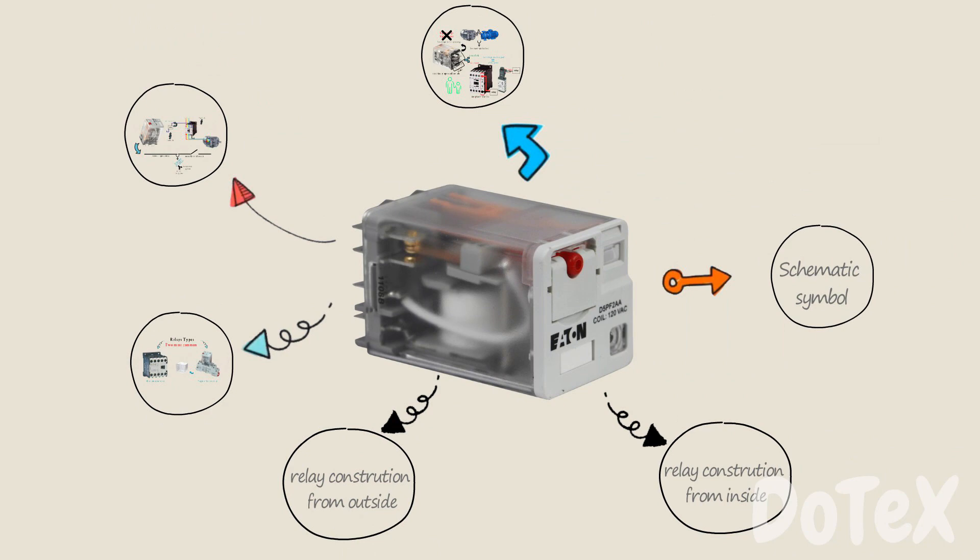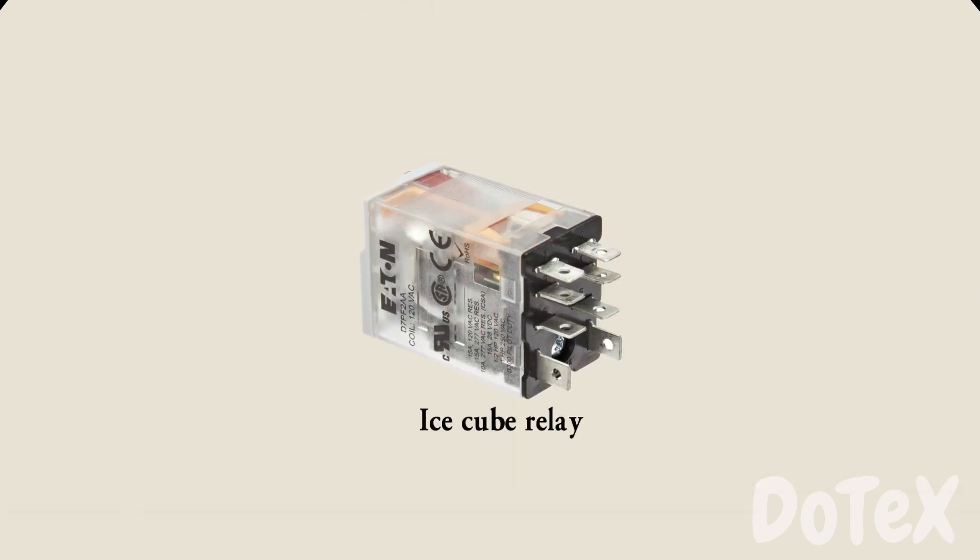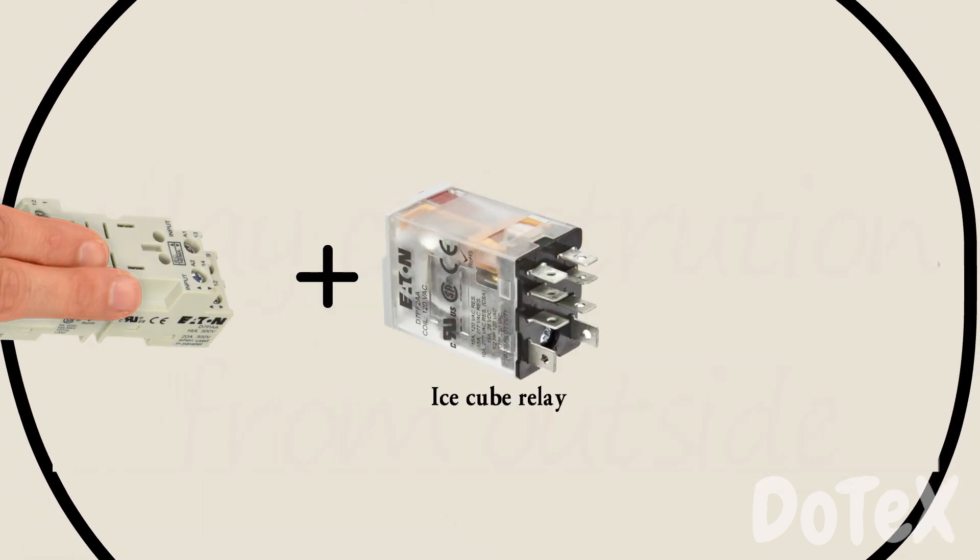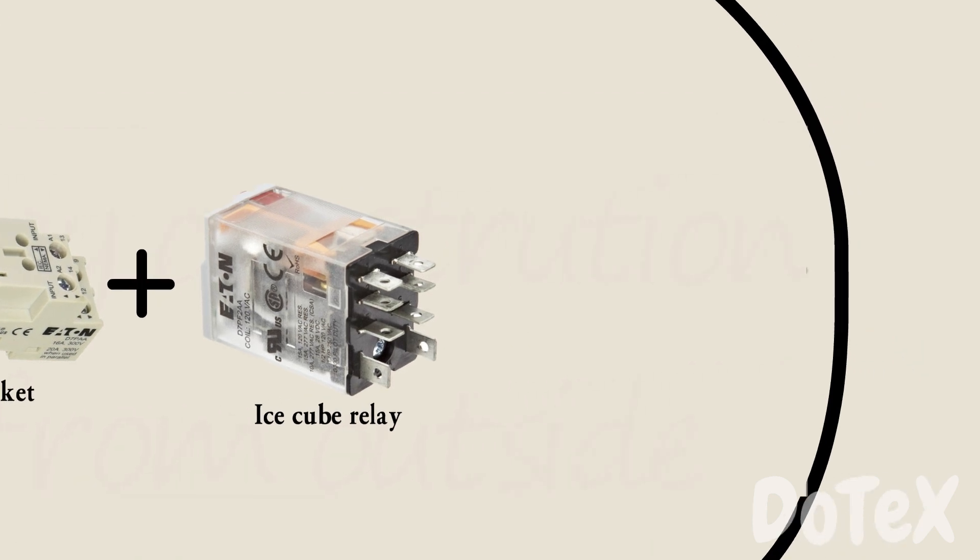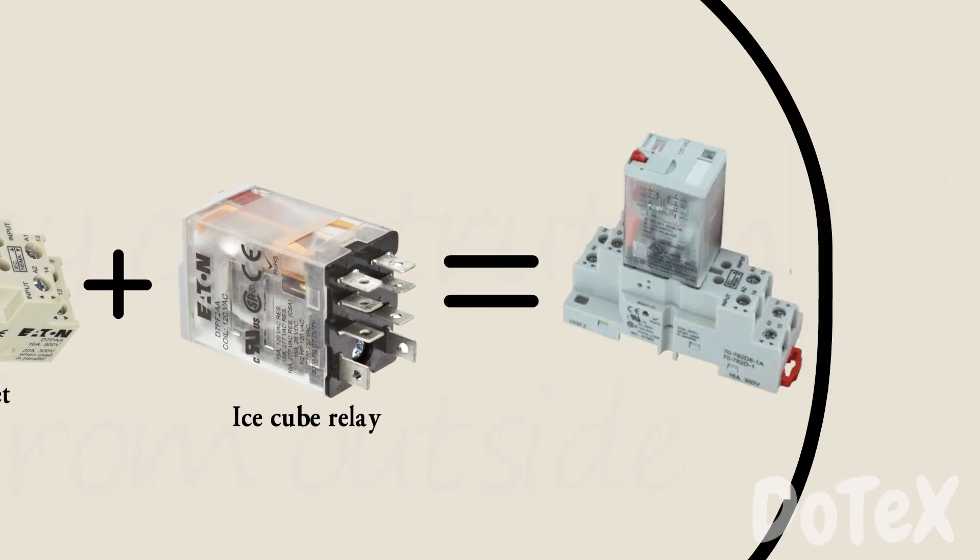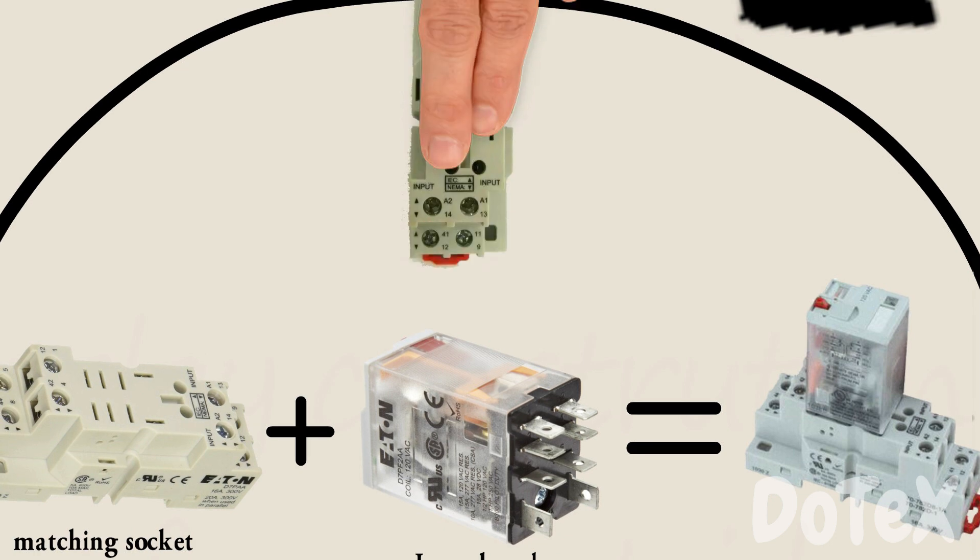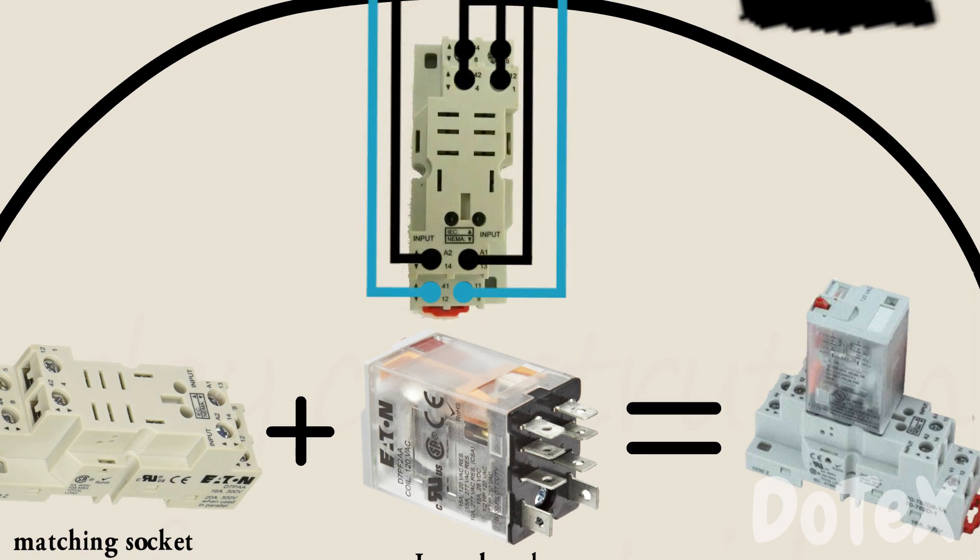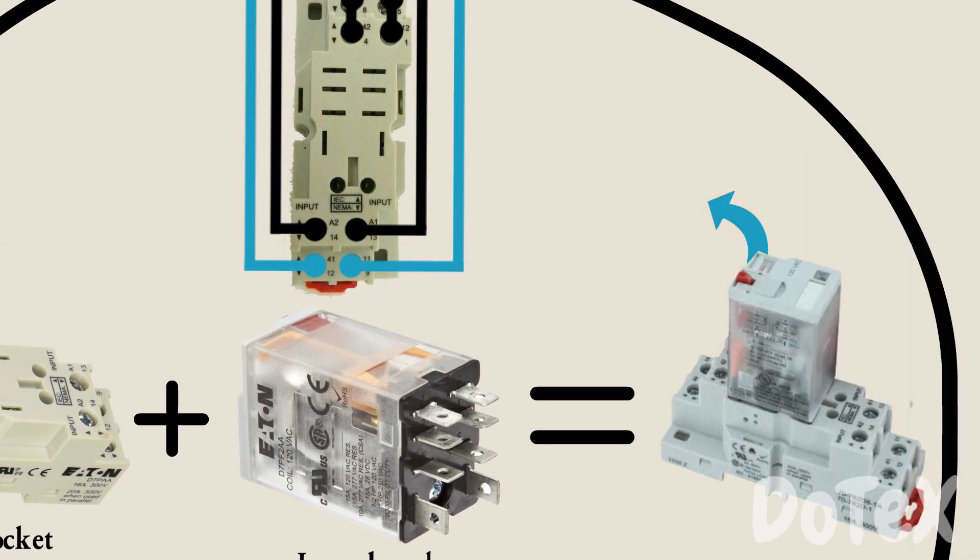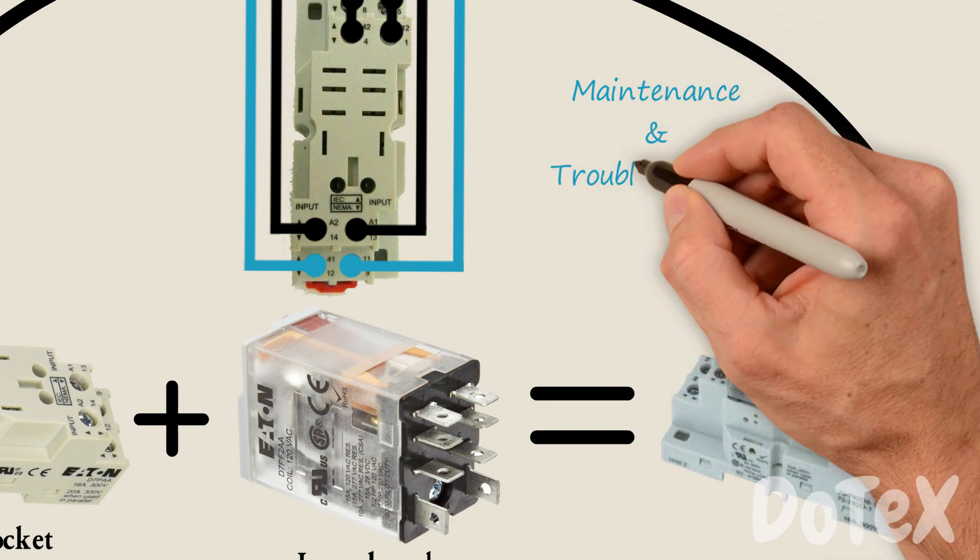Our next point is the relay construction from outside. Ice cube relays come in many sizes and have a matching socket into which the relay fits. The base is hardwired to the system and the relay can be removed for maintenance and troubleshooting purposes.